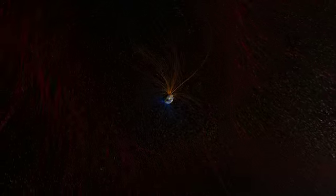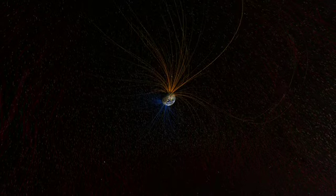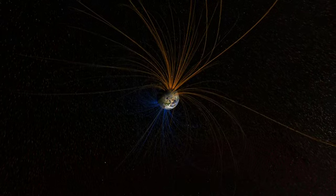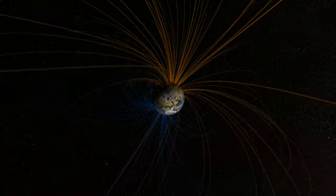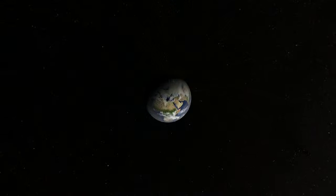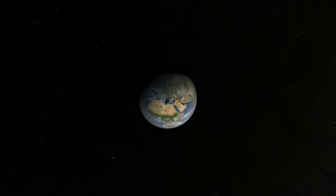In fact, that's just our first line of defense. Much of the solar energy that gets through is reflected back to space by clouds, ice, and snow.